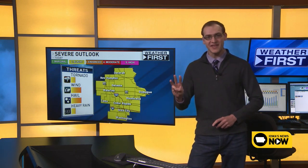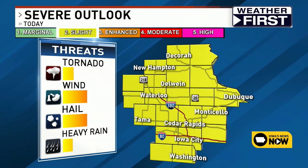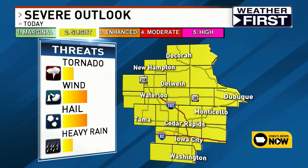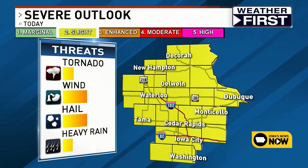The Storm Prediction Center issues severe weather outlooks every day, multiple times throughout the day. It's a five-point scale: a marginal risk, a slight risk, an enhanced risk, a moderate risk, and a high risk. Those are the categories of severe weather we talk about.